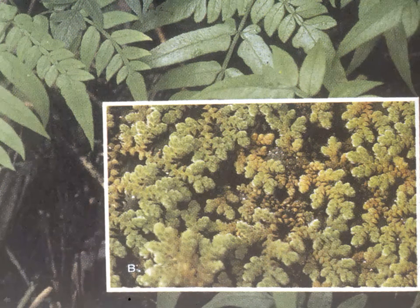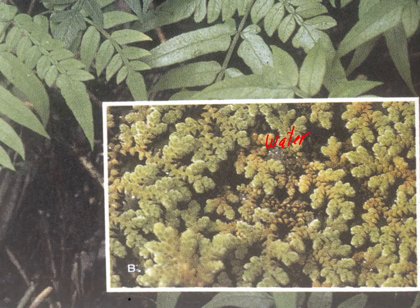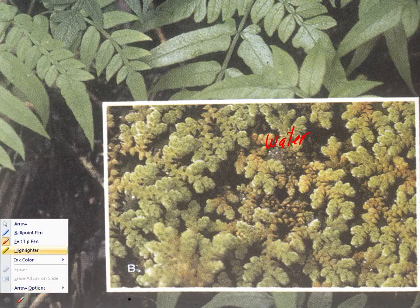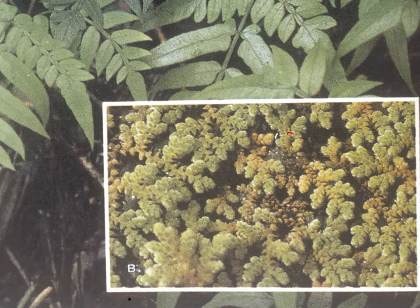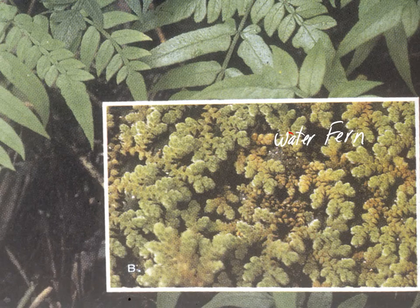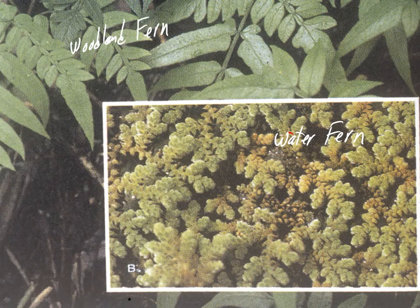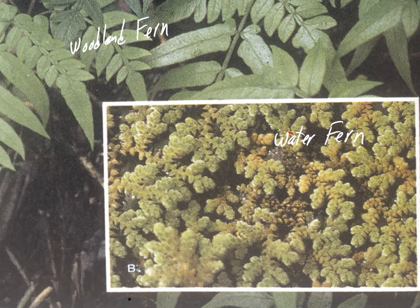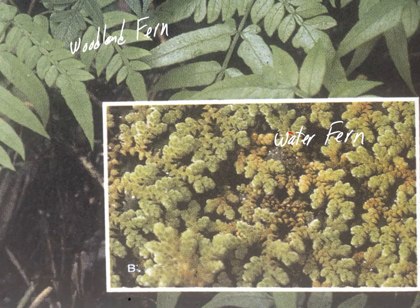We also said there were water ferns — here's an example. This is one of the heterosporous ferns, the genus Azolla, and we'll come back to that later. In the back here is a woodland fern, one of the homosporous ferns like the tree ferns. You can see a little bit of the difference in size — the water fern is very small, probably about twice as big as it should be in this image.